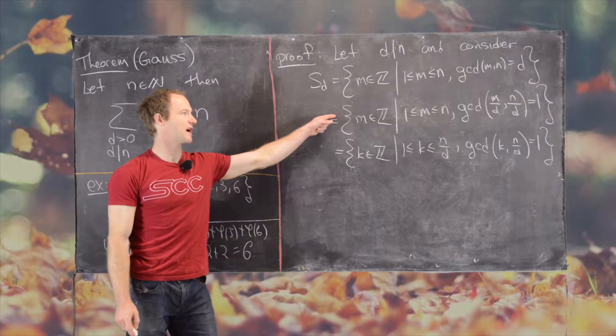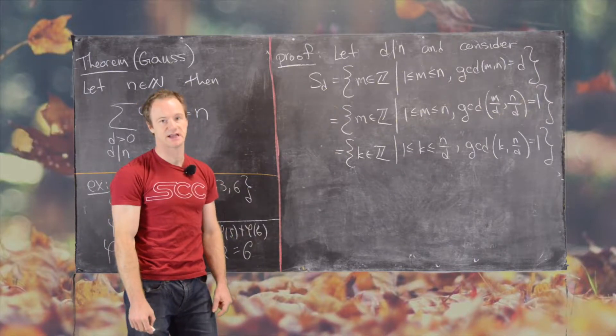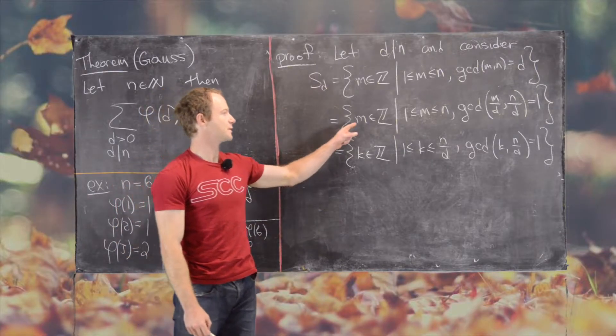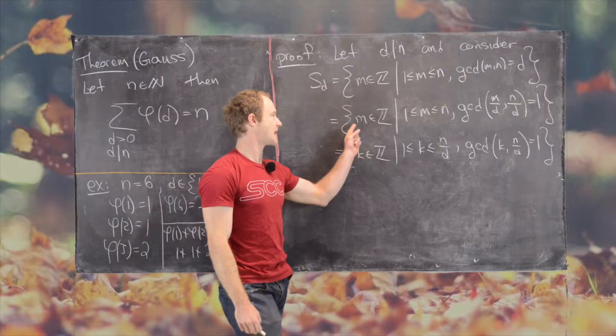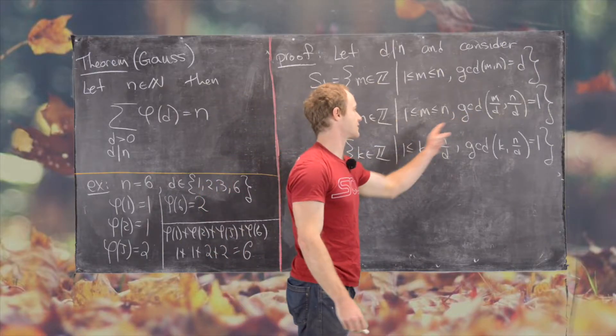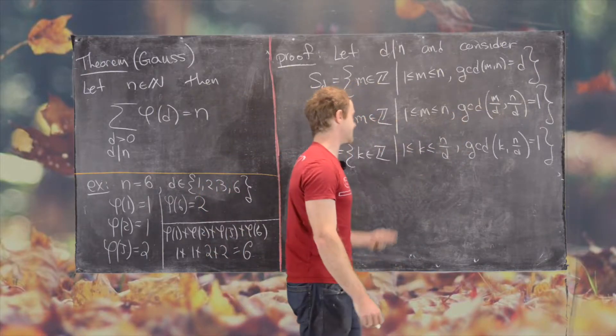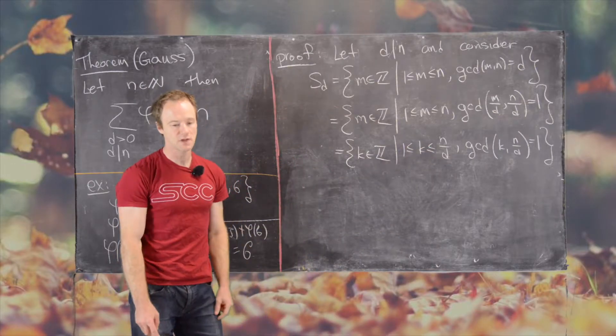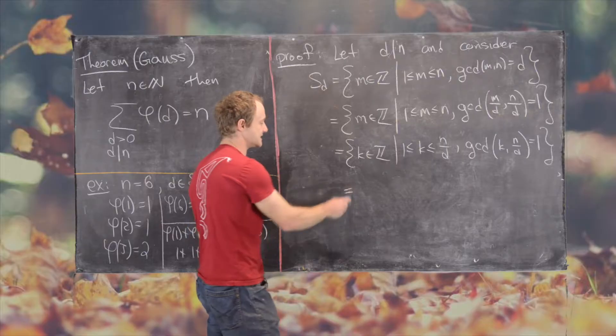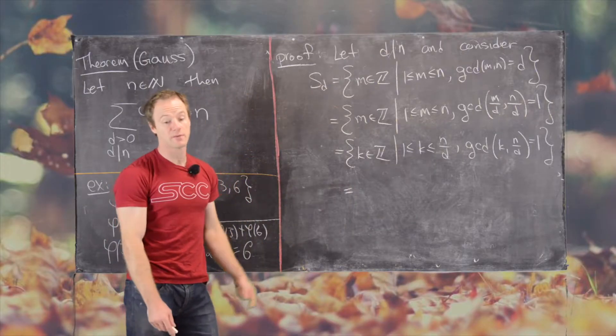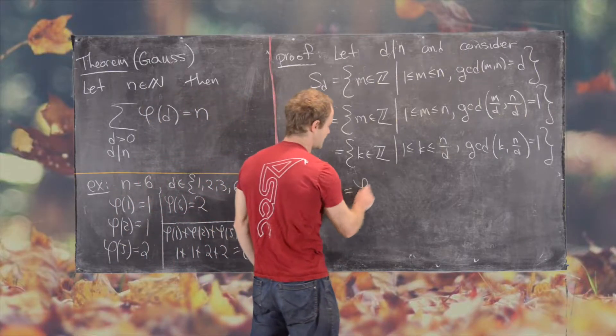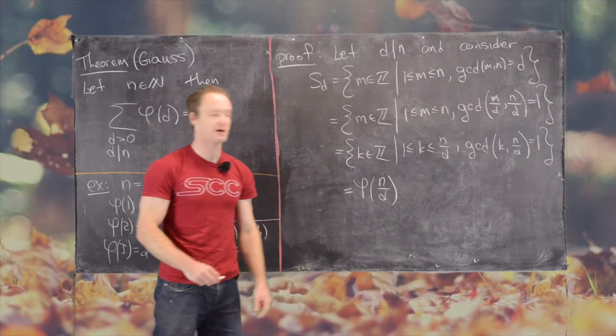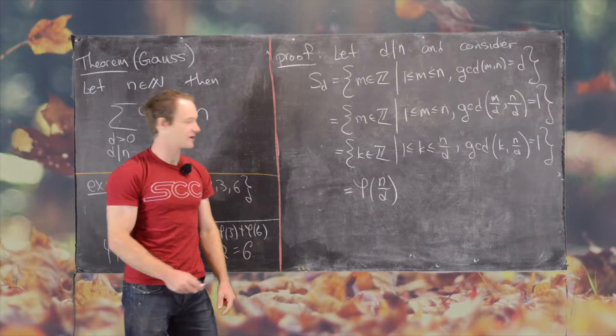So it's pretty clear that this middle set is equal to this last set as well. Because counting these M values all the way through when you're dividing by D is the same thing as counting these K values up to n over D. But now notice this set is exactly equal to a number that we know and that is phi of n over D because it's all the relatively prime numbers to n over D.